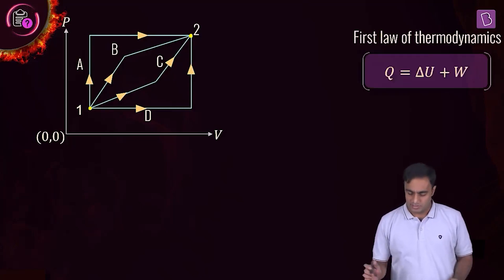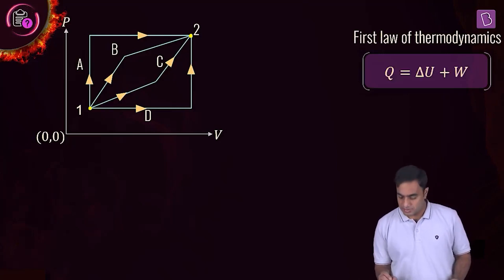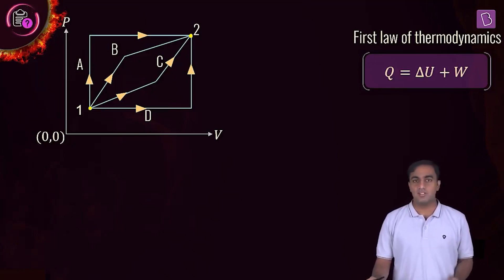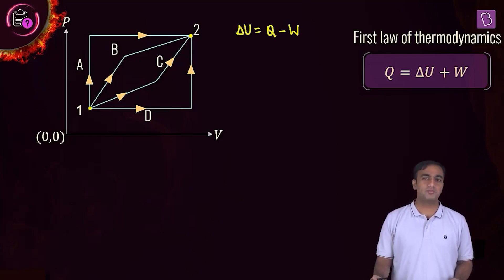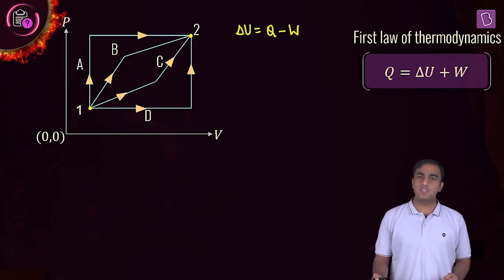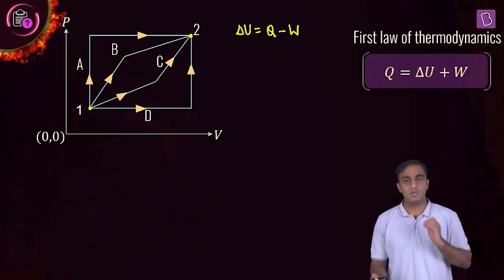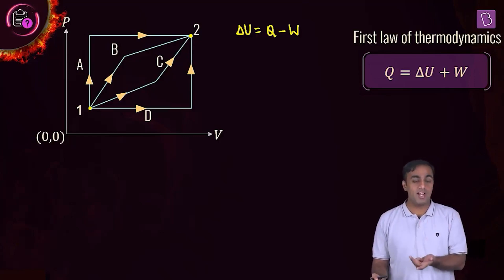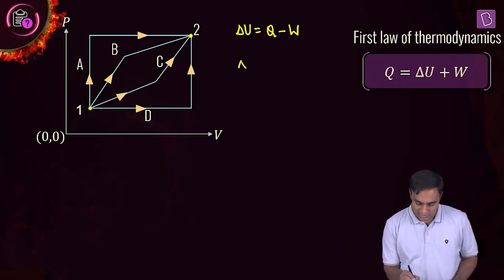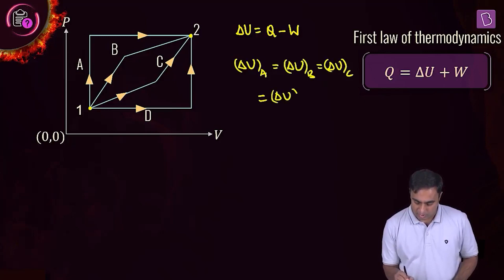The first law of thermodynamics says that the net heat supplied Q must equal the change in internal energy ΔU plus the net work done W, so ΔU = Q − W. Since the initial and final thermodynamic states are the same for all processes, the initial and final temperatures are also the same. Therefore, the change in internal energy is the same for all processes: ΔU_A = ΔU_B = ΔU_C = ΔU_D.